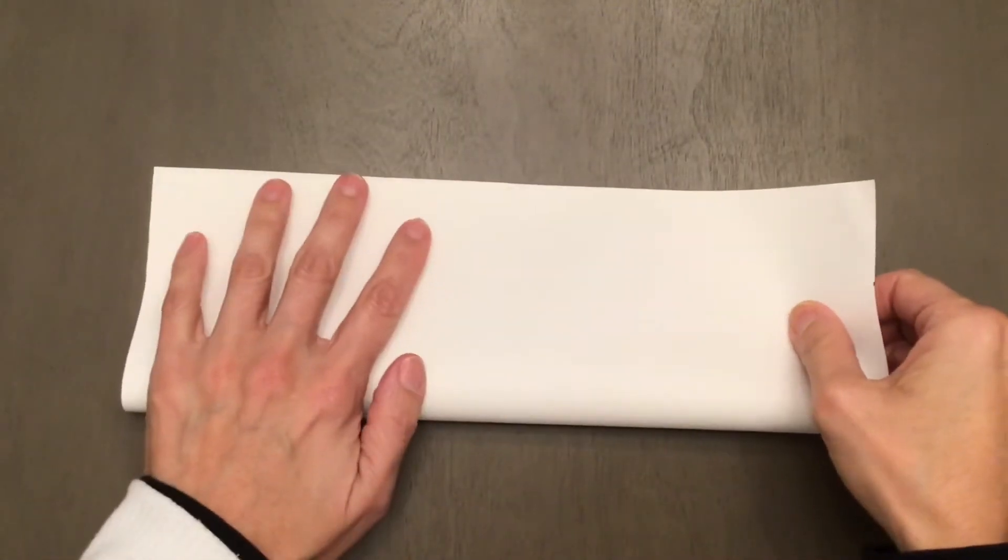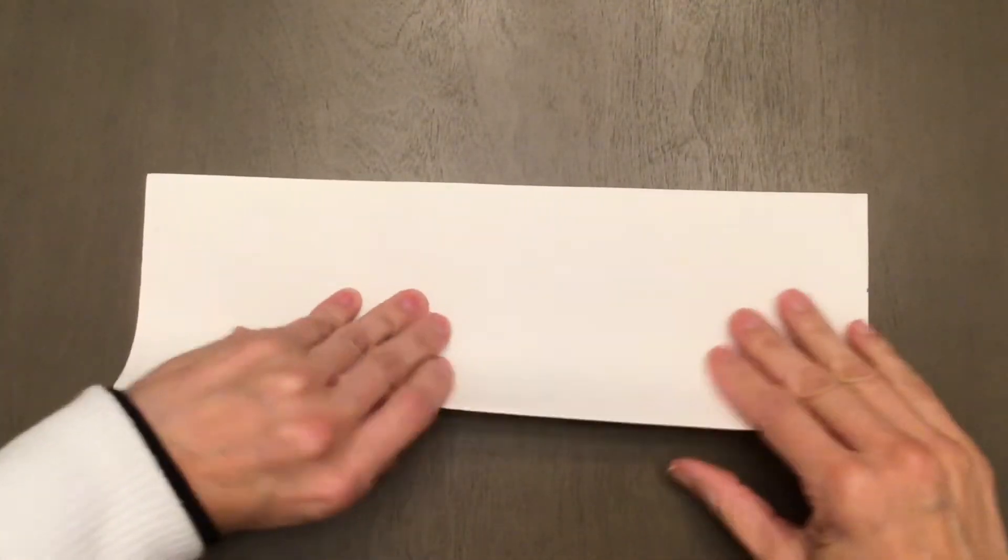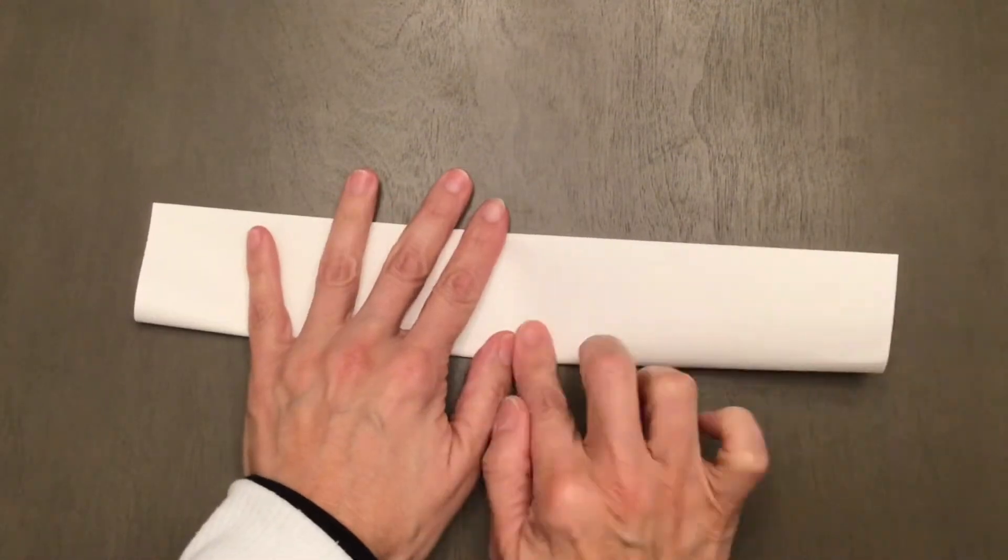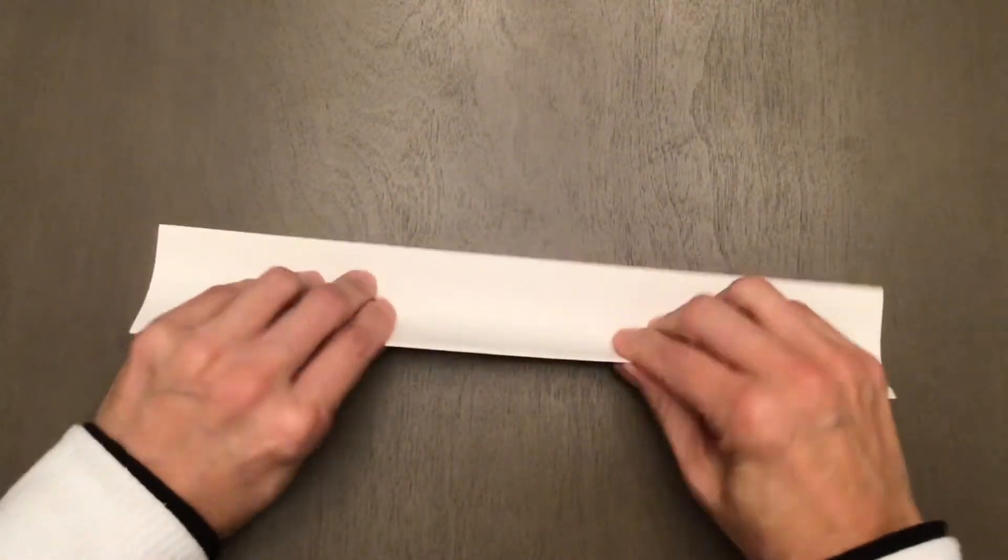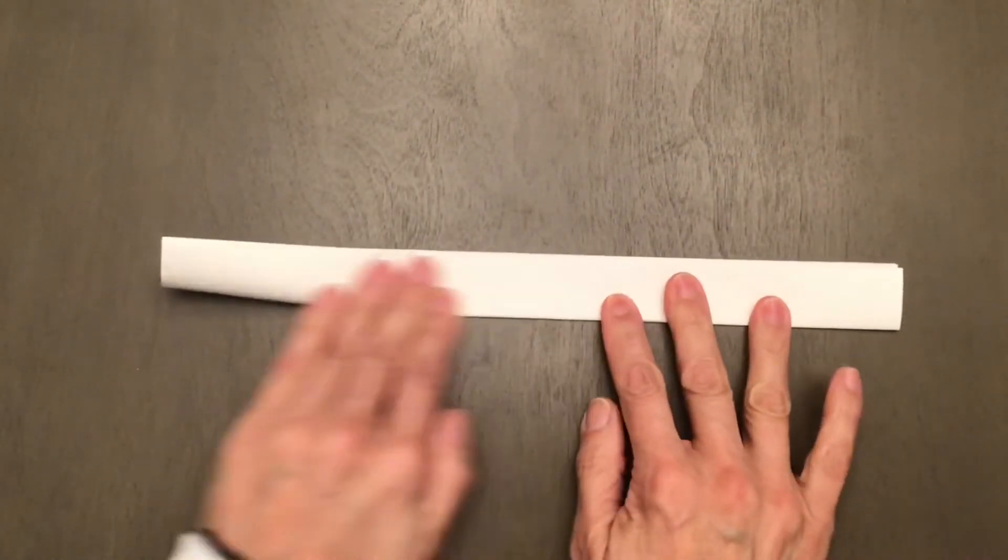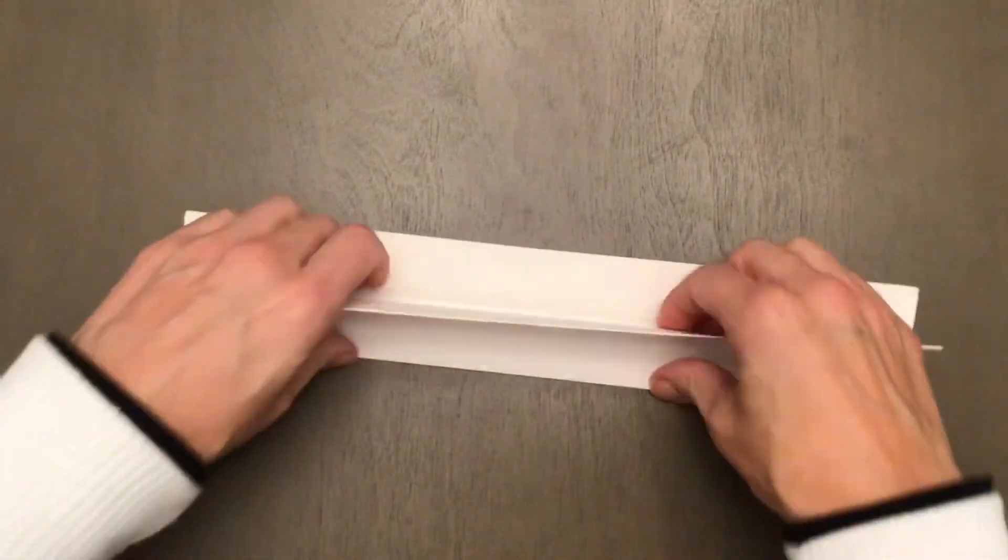Hi you guys, today we're going to create a value scale using three different techniques. First we're going to fold our paper just in case you don't have a ruler.